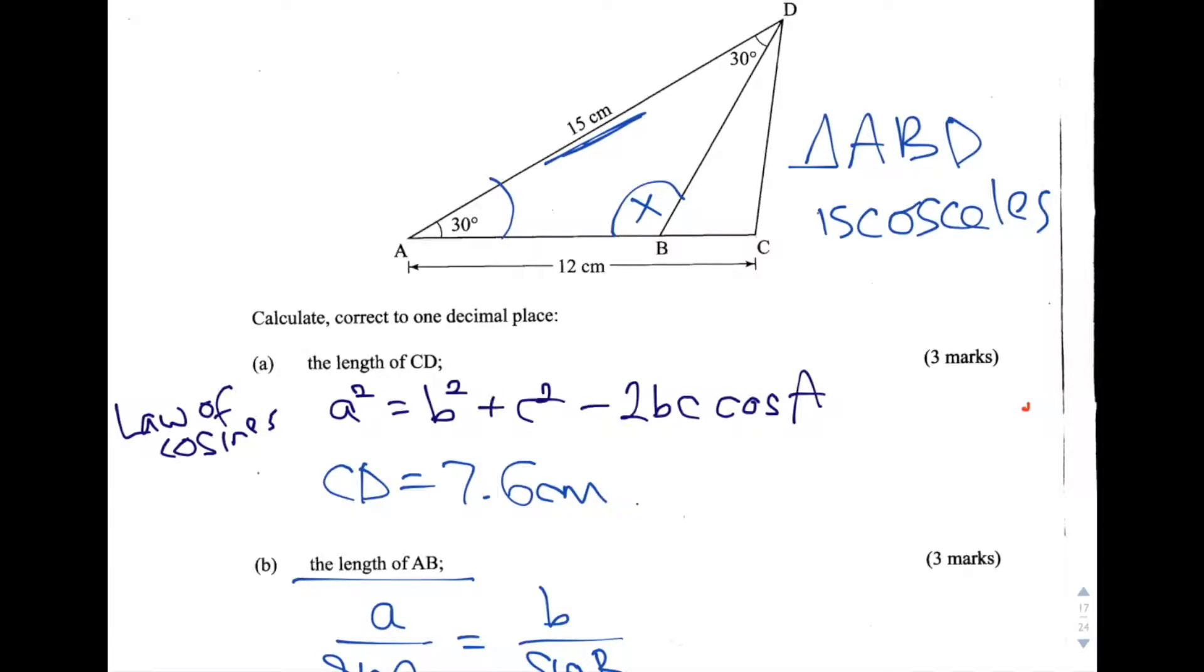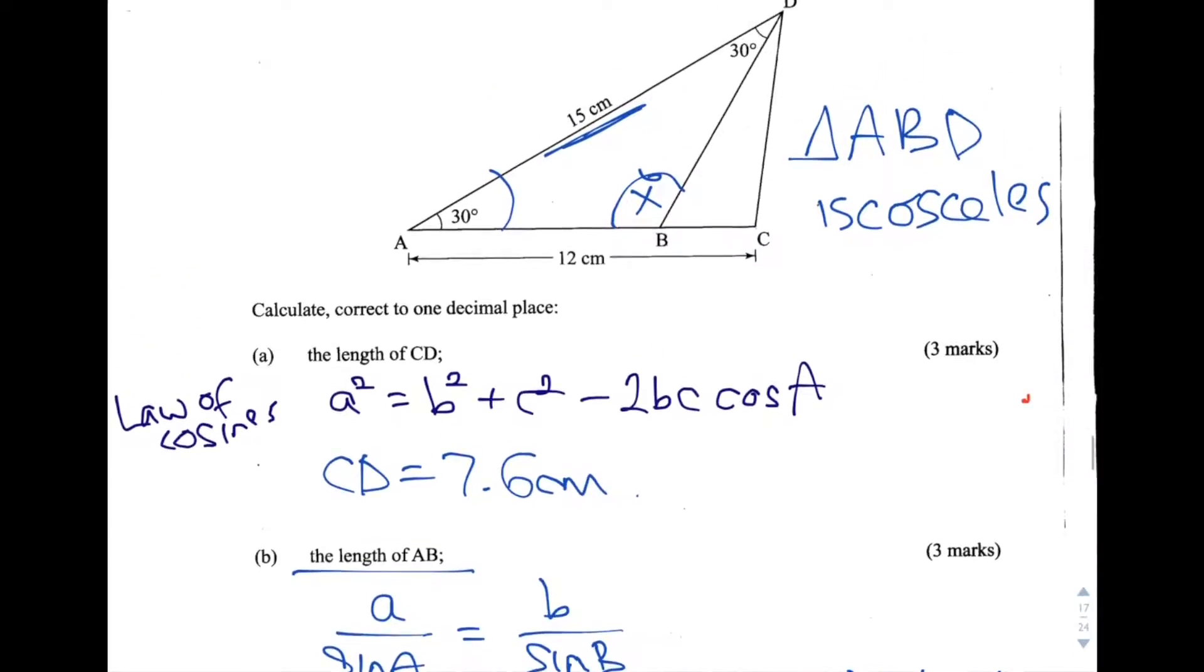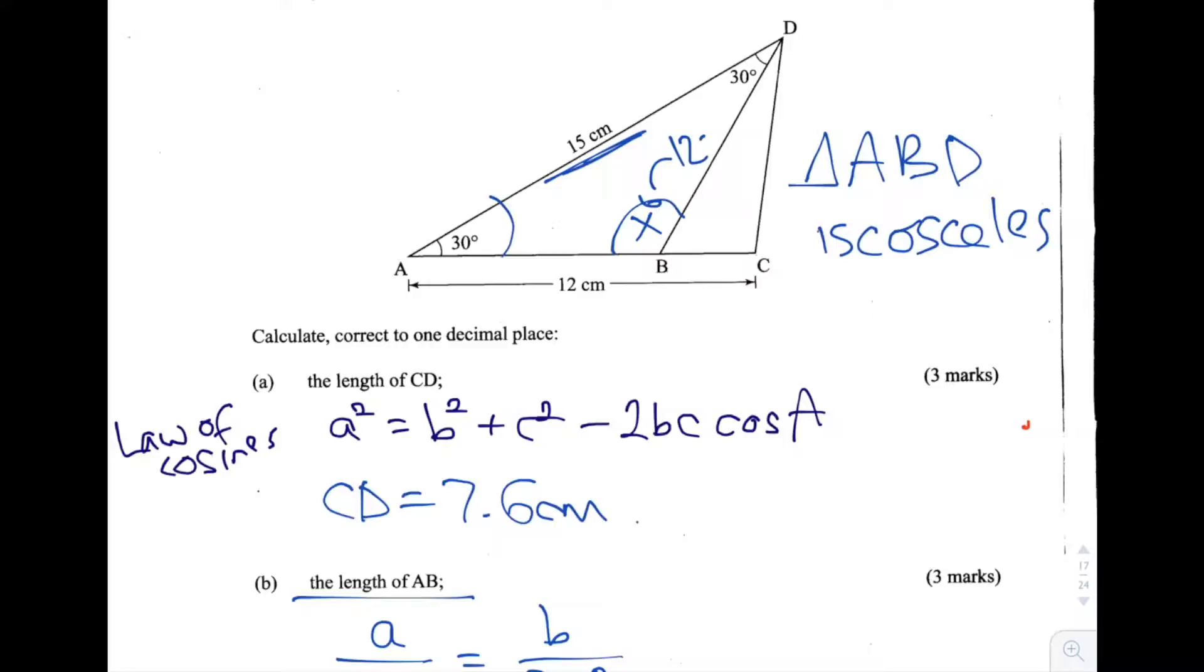So first, we need to find out what this angle X is. Since it's a triangle, we know that all three angles must add up to 180 degrees. So that means X, this angle here ABD, is equal to 180 minus 30 and then also minus another 30. So minus 30 twice, which equals 180 minus 60, which is 120 degrees. So we have this angle here as 120 degrees.